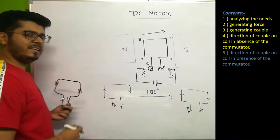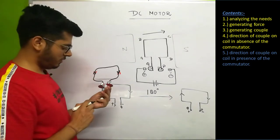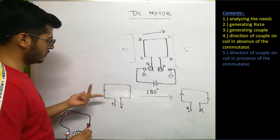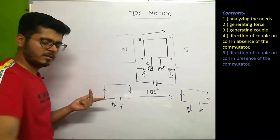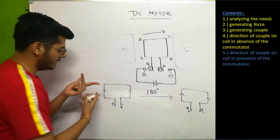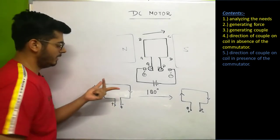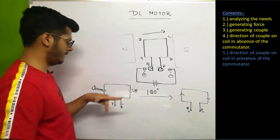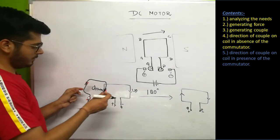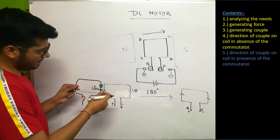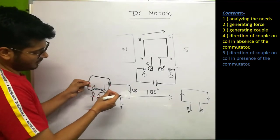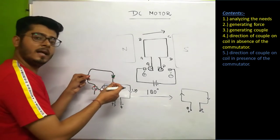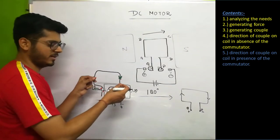Even after 180 degrees of rotation, the current direction is not changing by using this split ring arrangement. Because the current direction doesn't change, the direction of force stays the same. On the left arm, the force is downward, and on the right side, the force is upward. The coil wants to rotate in this particular manner — the AB end moves in one direction and the other end moves upward.